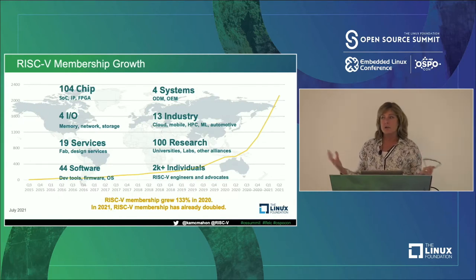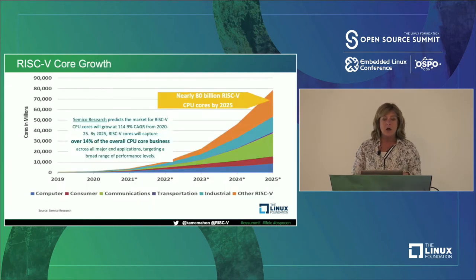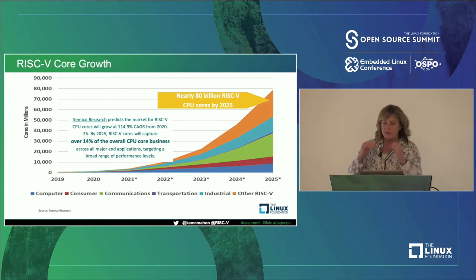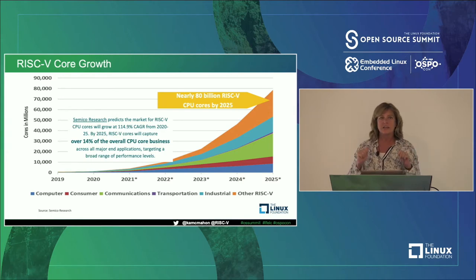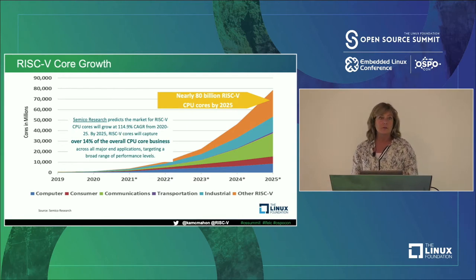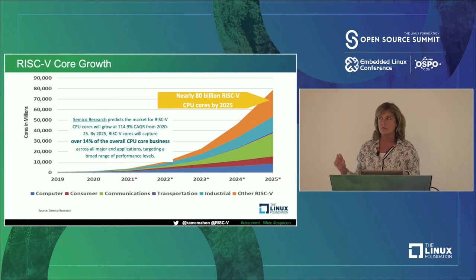We've seen some really incredible growth over the last five years. Looking at the number of RISC-V processor cores, that number is 80 billion by 2025, up from about 50 billion the previous year. When you think of a core, it's in virtually everything we use — your earbuds, your phone, your refrigerator if it talks to you. And a laptop has multiple cores.